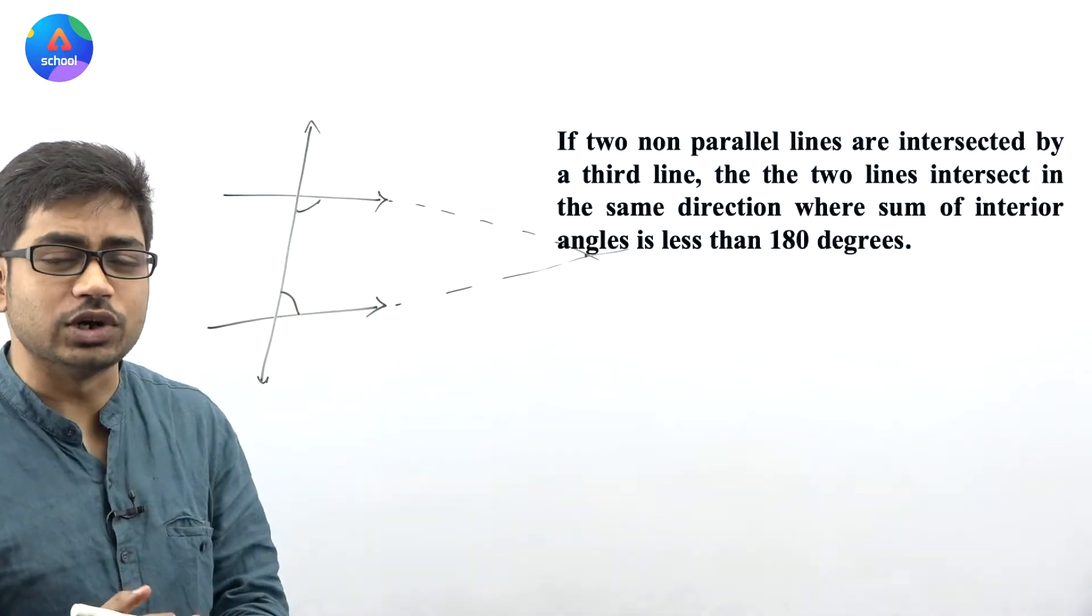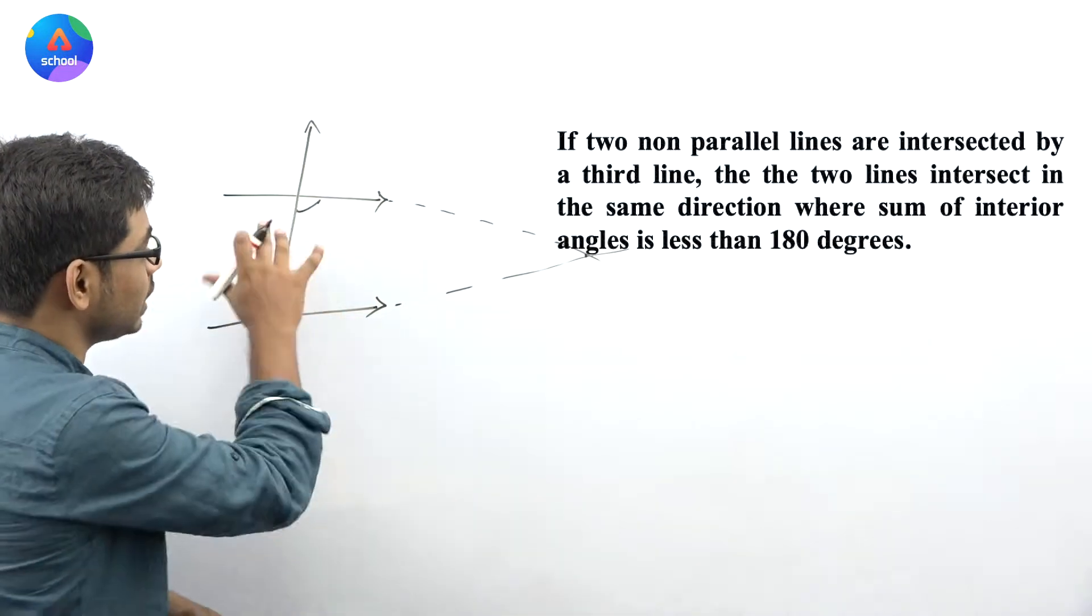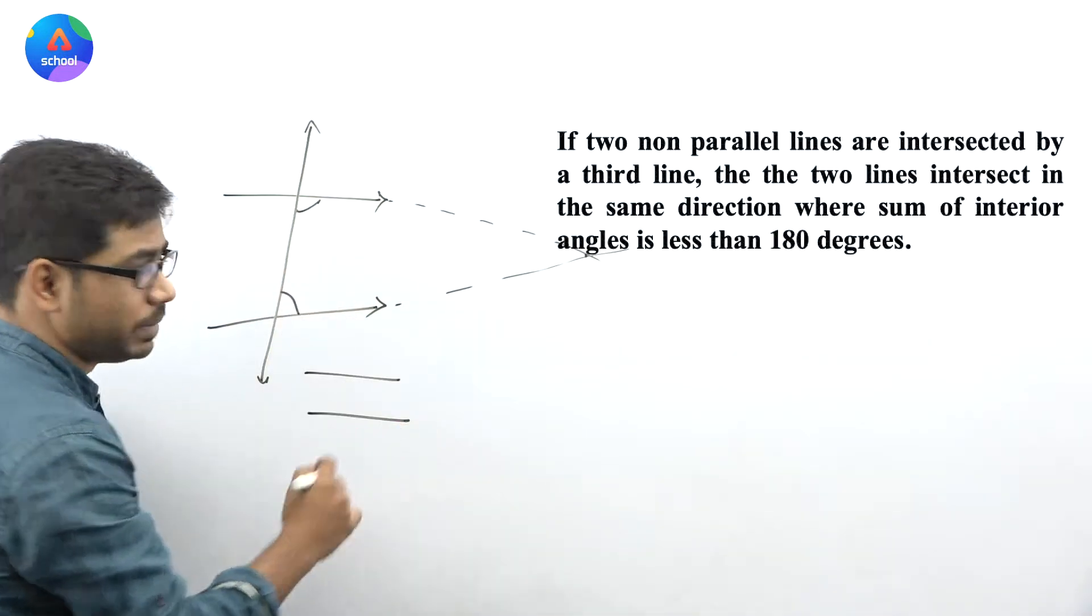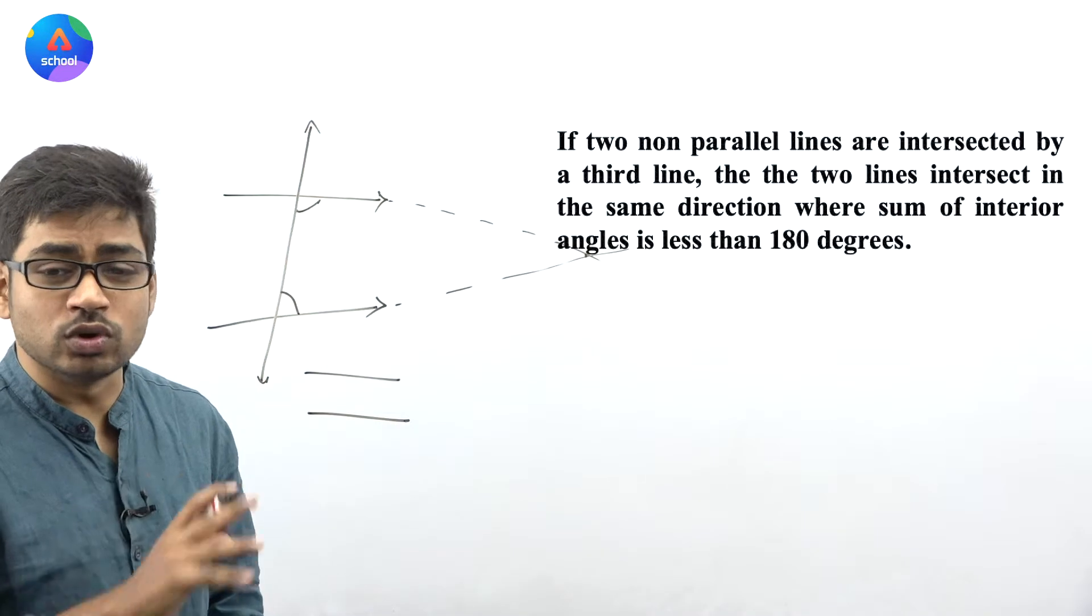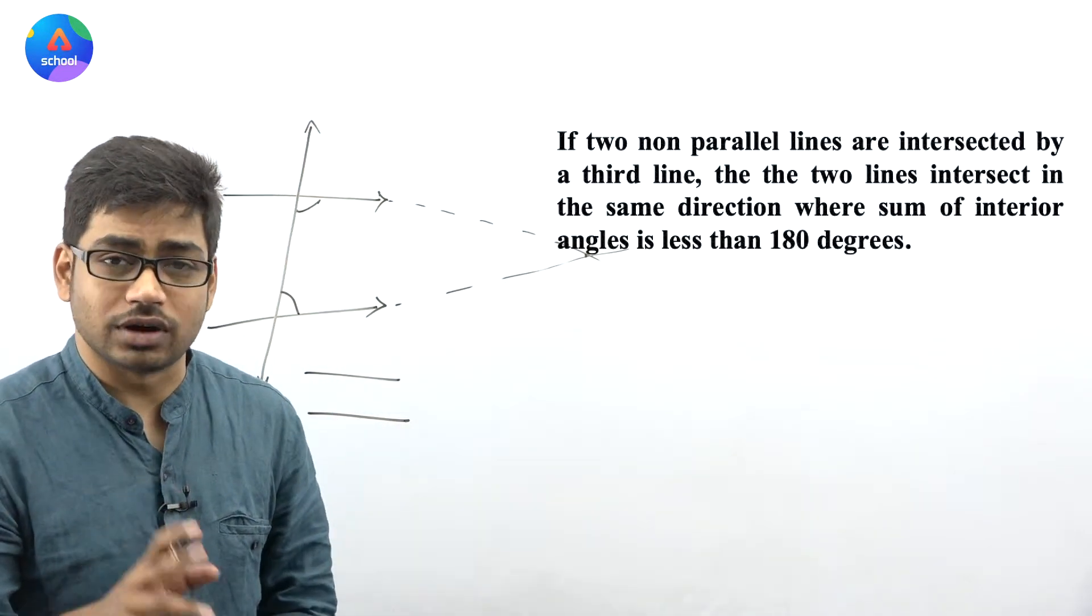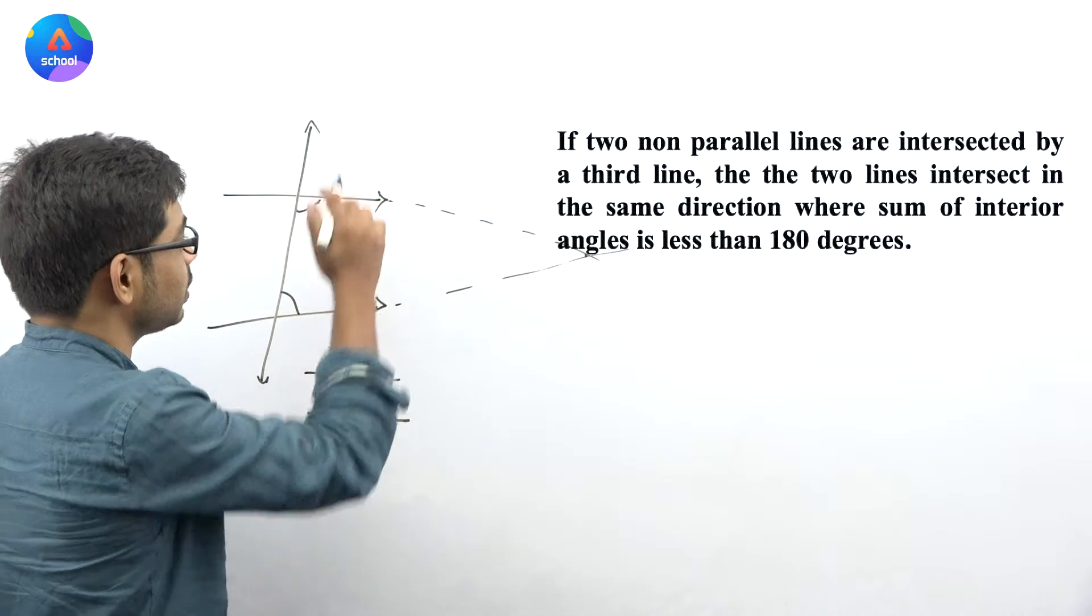So how can we write this in an easier way? Two non-parallel lines, because if they are parallel they will never intersect. Two non-parallel lines are intersected by a third line.